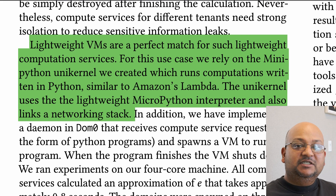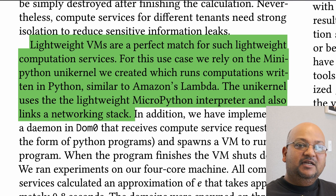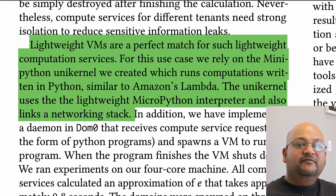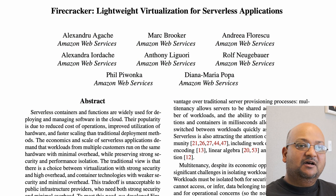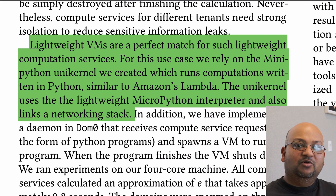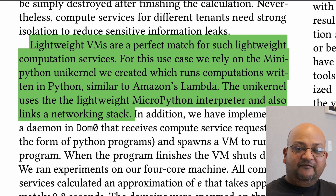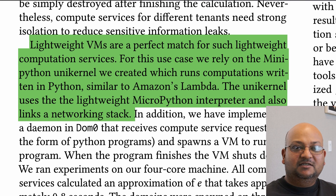Another area where lightweight virtual machines can be really useful is implementing function-as-a-service features like AWS Lambda. Here you need something that can be instantiated really quickly on demand, do a computation, and exit. Clearly, a full-blown virtual machine would take too long. In fact, if you look at the recent Firecracker paper from Amazon, it goes in the same design direction as the authors here. So that was a quick look at a paper exploring design trade-offs between containers and virtual machines, building tools to create lightweight virtual machines that have the security advantages of VMs as well as the quick boot-up and low-memory footprint of containers. I hope you enjoyed that and I will see you next time.